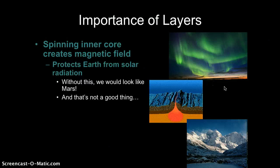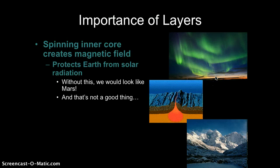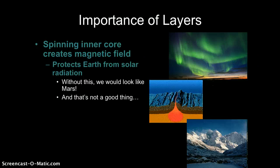The inner core is actually really important because it is full of iron. And because that iron is spinning from when the earth is still formed, it creates a magnetic field that protects us from solar radiation. We can see that solar radiation here, the northern lights. So if it wasn't for this spinning center of the earth, we would look like Mars, which would not be good because we would not be alive.